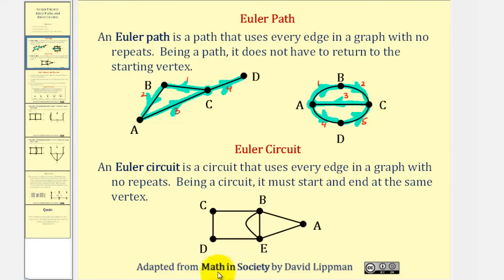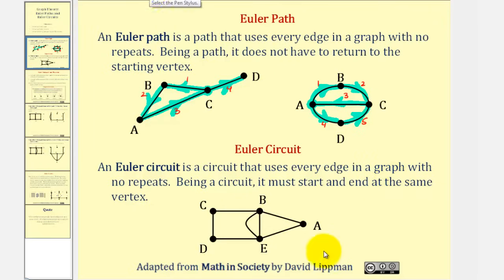An Euler circuit is a circuit that uses every edge in a graph with no repeats. Being a circuit, that means it must start and end at the same vertex. So an Euler path does not have to start and end at the same vertex, but an Euler circuit does.